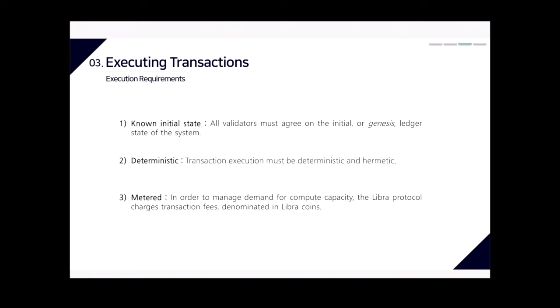The second requirement is deterministic: transaction execution must be deterministic, meaning the output is completely predictable and based only on information contained within the transaction and current ledger state. The third requirement is metered: the Libra protocol charges transaction fees denominated in Libra coins, following the gas model popularized by Ethereum. Libra selects validators with sufficient capacity, similar to the Kakao blockchain Klaytn.